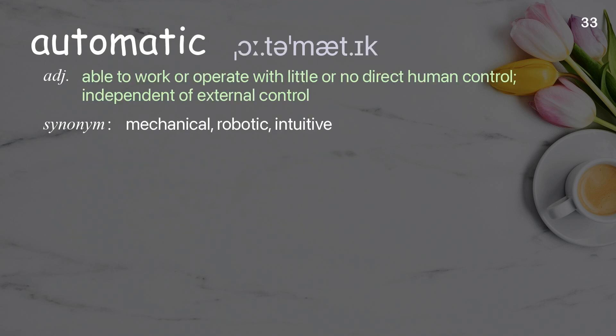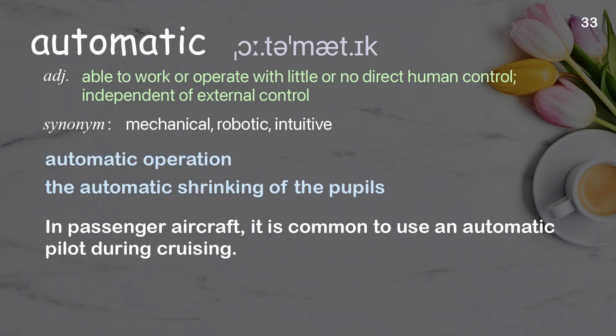Automatic: able to work or operate with little or no direct human control, independent of external control. Examples: automatic operation; the automatic shrinking of the pupils. In passenger aircraft, it is common to use an automatic pilot during cruising.